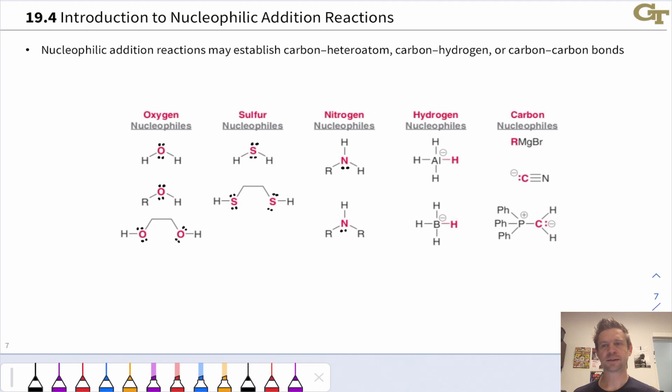This slide summarizes the major classes of nucleophiles that we'll encounter in this unit. The three major classes of heteroatom nucleophiles are oxygen nucleophiles—water, alcohols, diols, for example—sulfur nucleophiles—thiols—and nitrogen nucleophiles—amines. These all add reversibly.